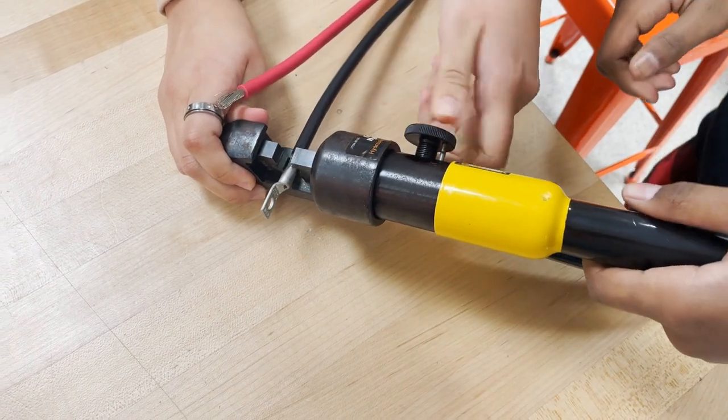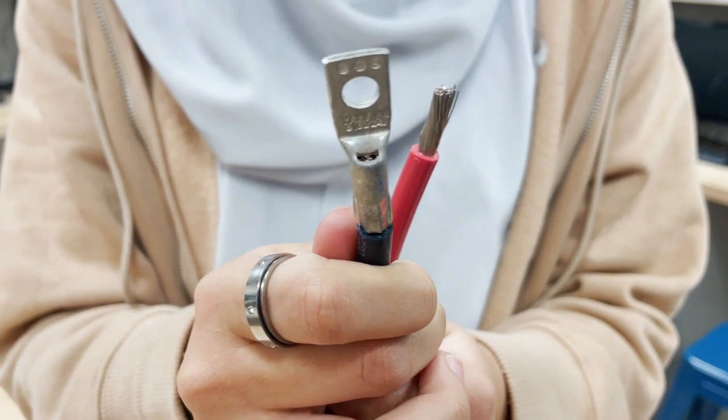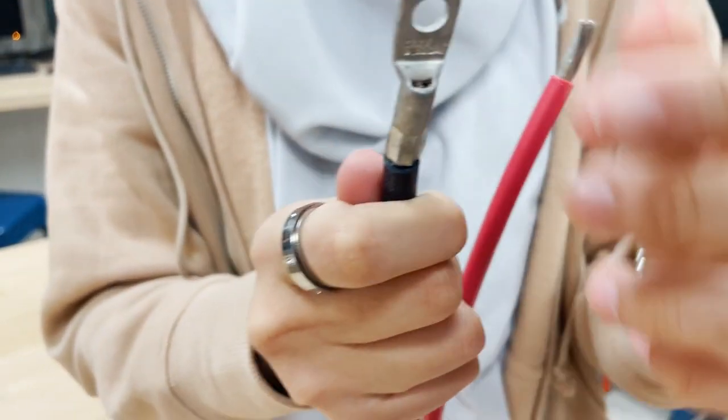And now you're going to disengage the crimper. This is what the wire should look like. Just like that.